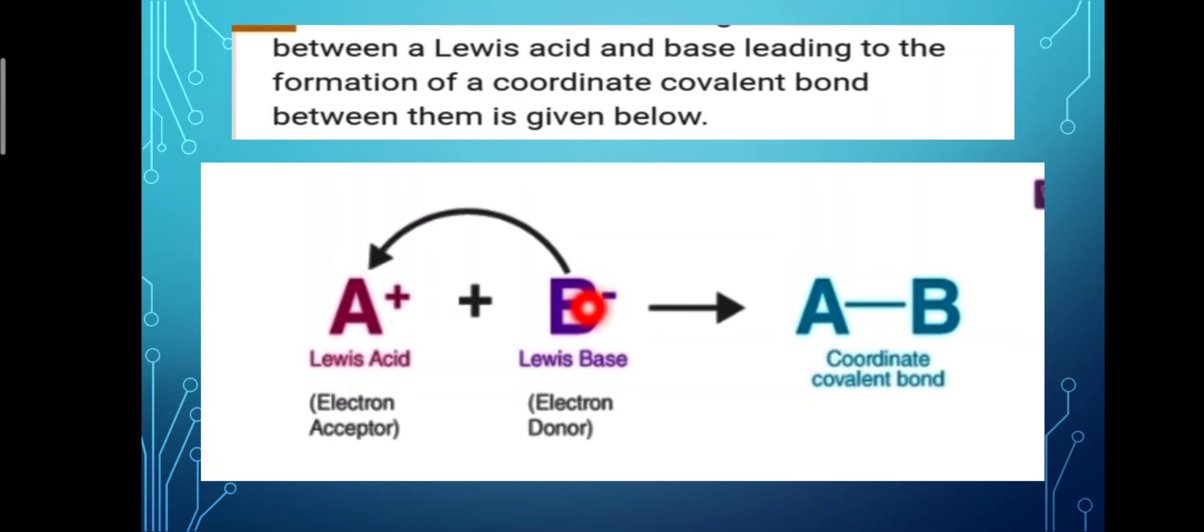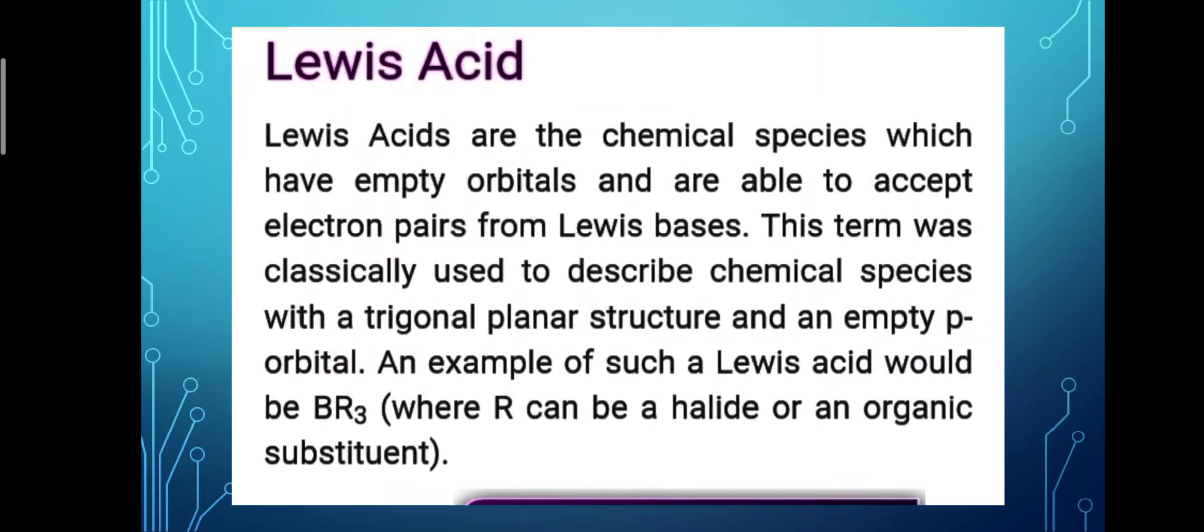Lewis acids are the chemical species which have empty orbitals and are able to accept electron pairs from Lewis bases. This term was classically used to describe chemical species with a trigonal planar structure and an empty p orbital.